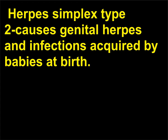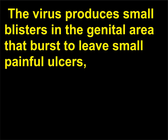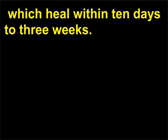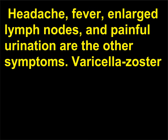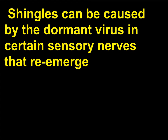Herpes simplex type 2 causes genital herpes and infections acquired by babies at birth. The virus is contagious and can be transmitted by sexual intercourse. The virus produces small blisters in the genital area that burst to leave small painful ulcers, which heal within 10 days to 3 weeks. Headache, fever, enlarged lymph nodes, and painful urination are the other symptoms. Varicella zoster (herpes zoster) causes chicken pox and shingles. Shingles can be caused by the dormant virus in certain sensory nerves that re-emerge with the decline of the immune system.